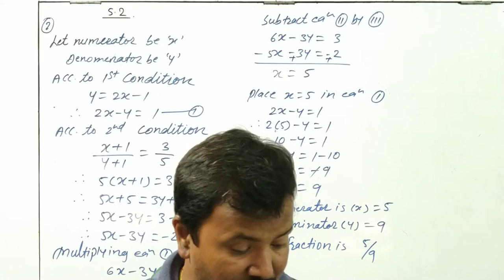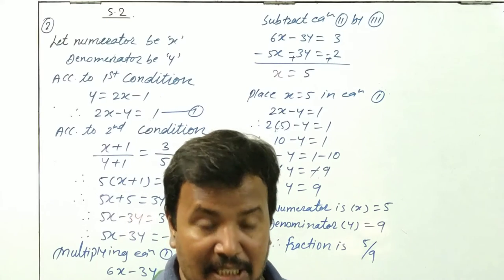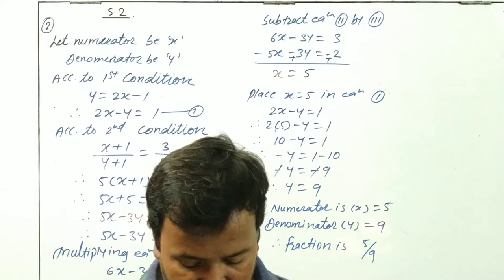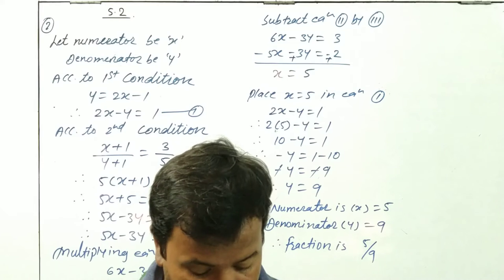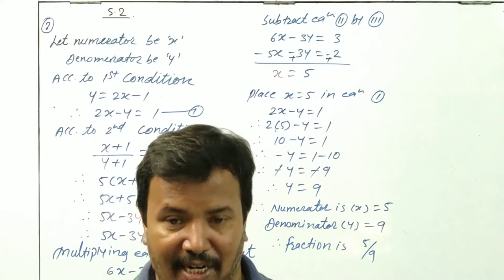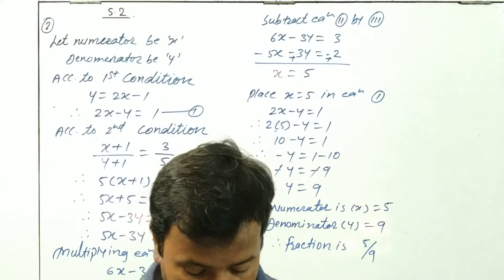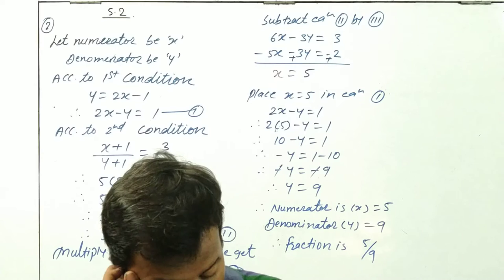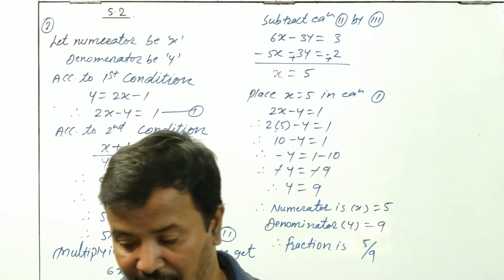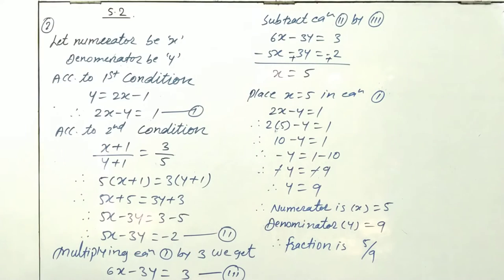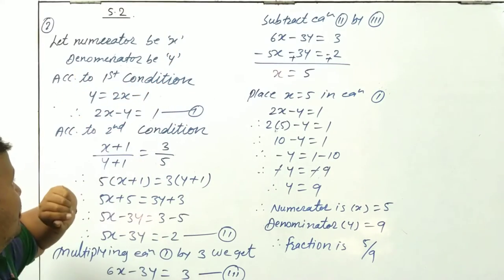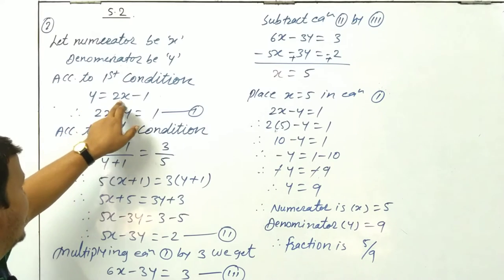Next question: the denominator of a fraction is one less than twice its numerator. If one is added to the numerator and denominator respectively, the ratio of numerator to denominator is 3 is to 5. Find the fraction. Let the numerator be x and the denominator be y.